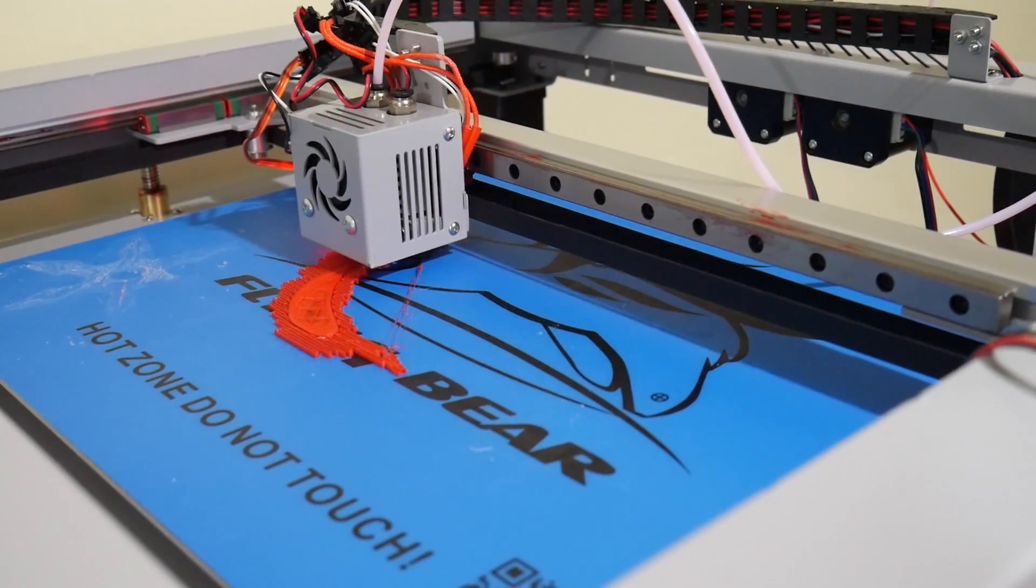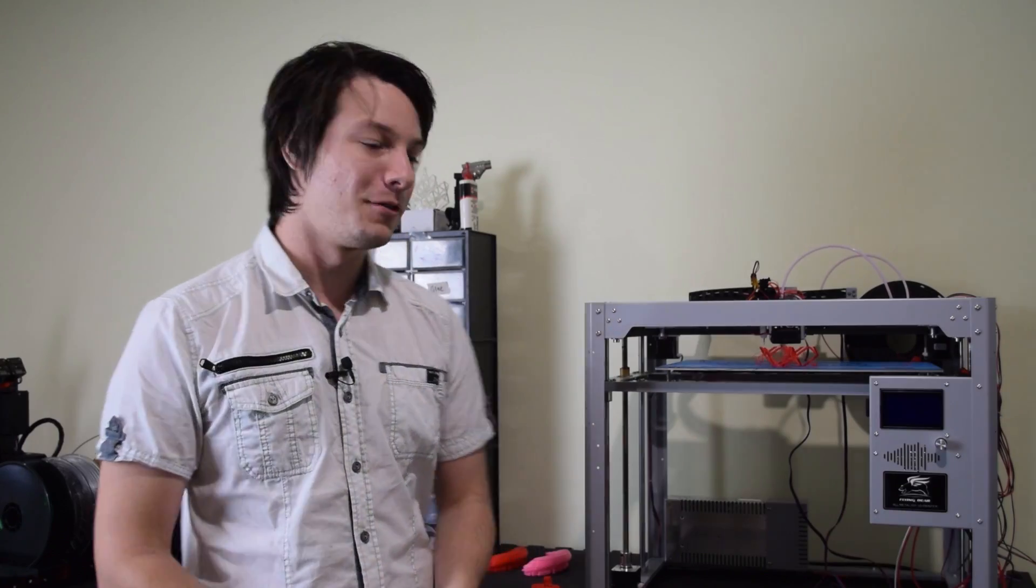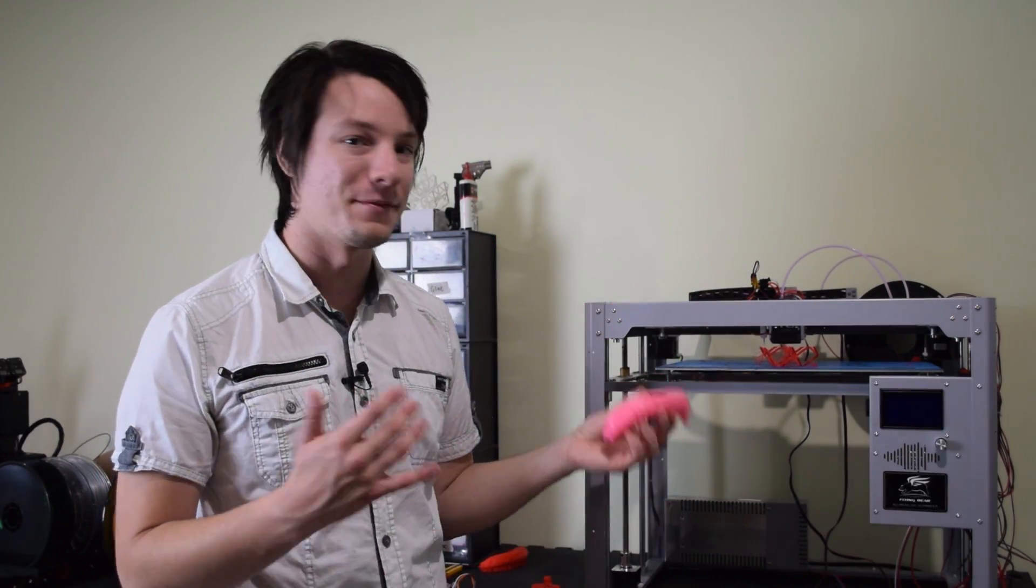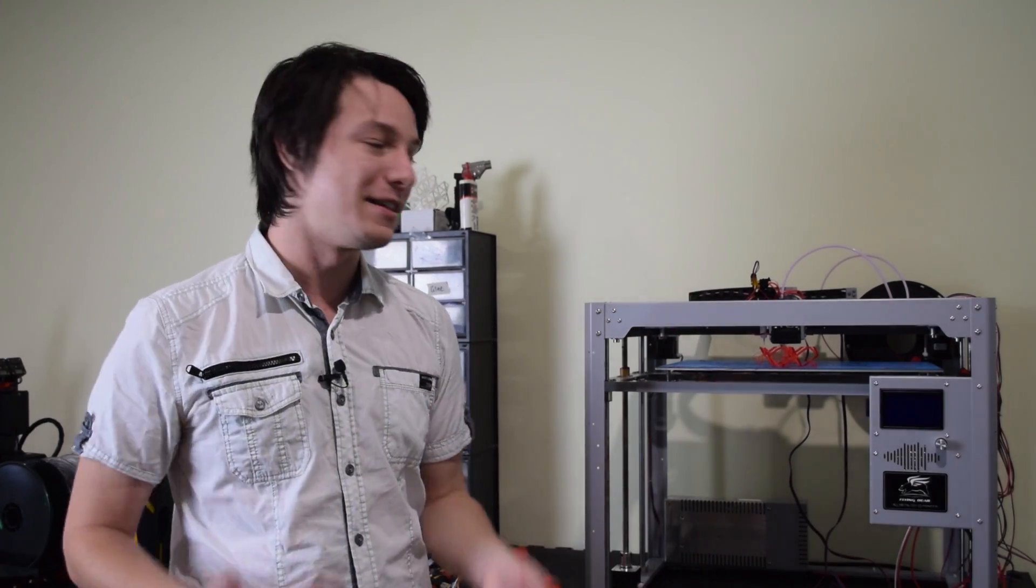And the fun does not stop there. First prints off the tornado were, for lack of a better word, absolutely terrible. Major Z-banding due to the table visually rocking back and forth as it moves, the parts had zero strength, and the long Bowden tube does no favors in terms of getting extrusion accuracy.